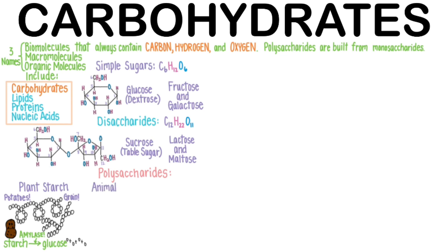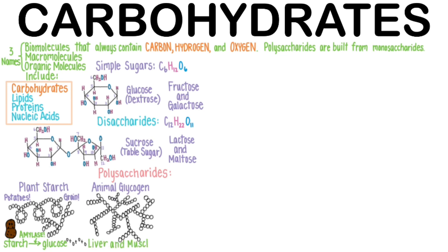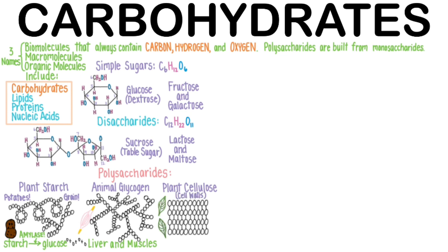Animals store their carbohydrates as long branching chains called glycogen. We can store only limited quantities of glycogen in our liver and our muscle cells. Plant cellulose is a highly structured polysaccharide that makes up plant cell walls. This is completely indigestible for us. Only animals that contain certain kinds of stomachs and bacterial populations are able to extract any calories from cellulose. We call these types of animals herbivores.